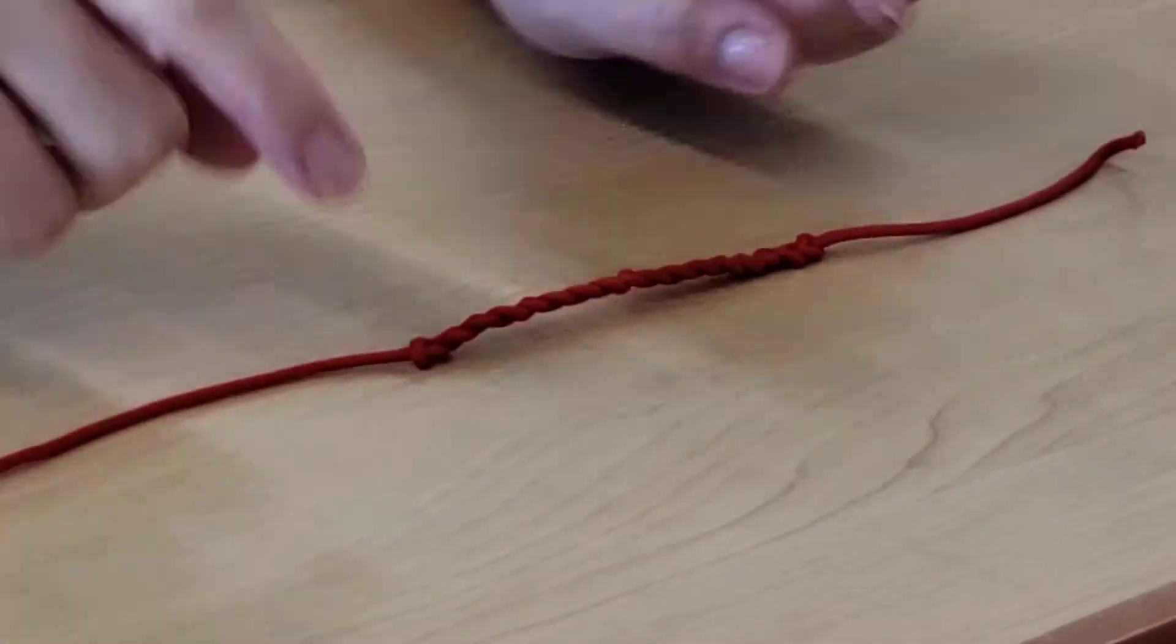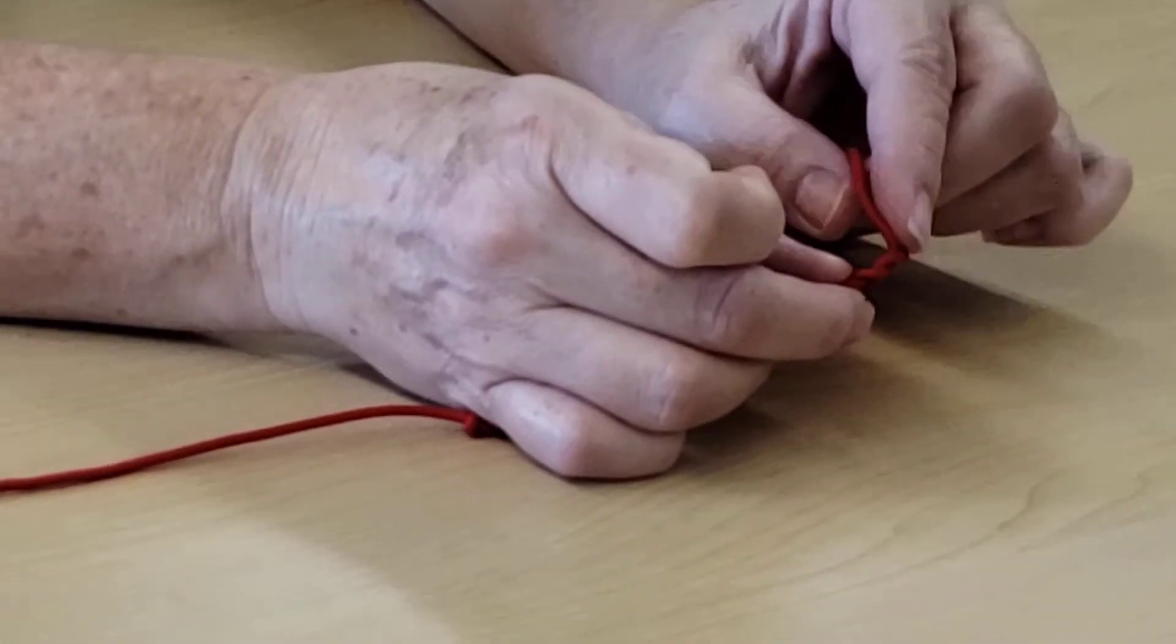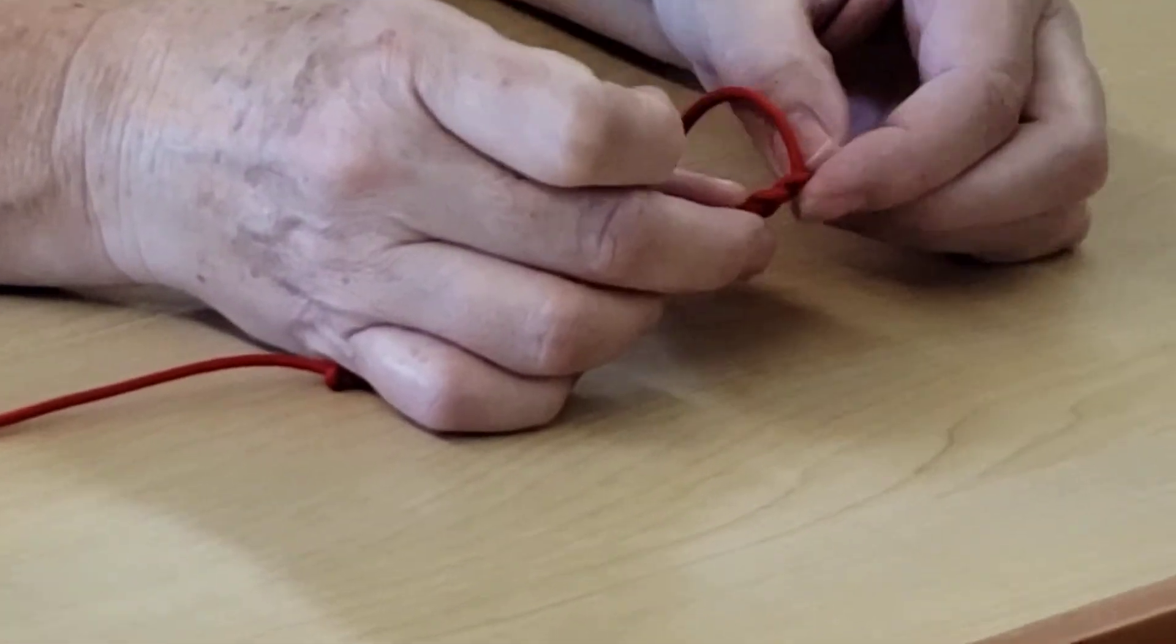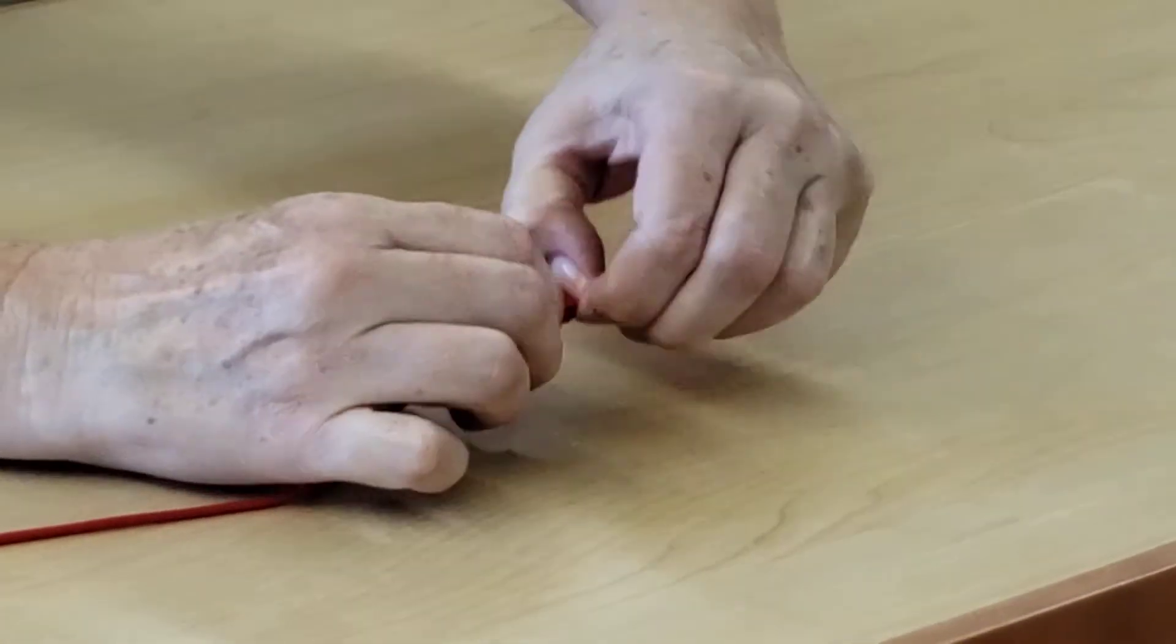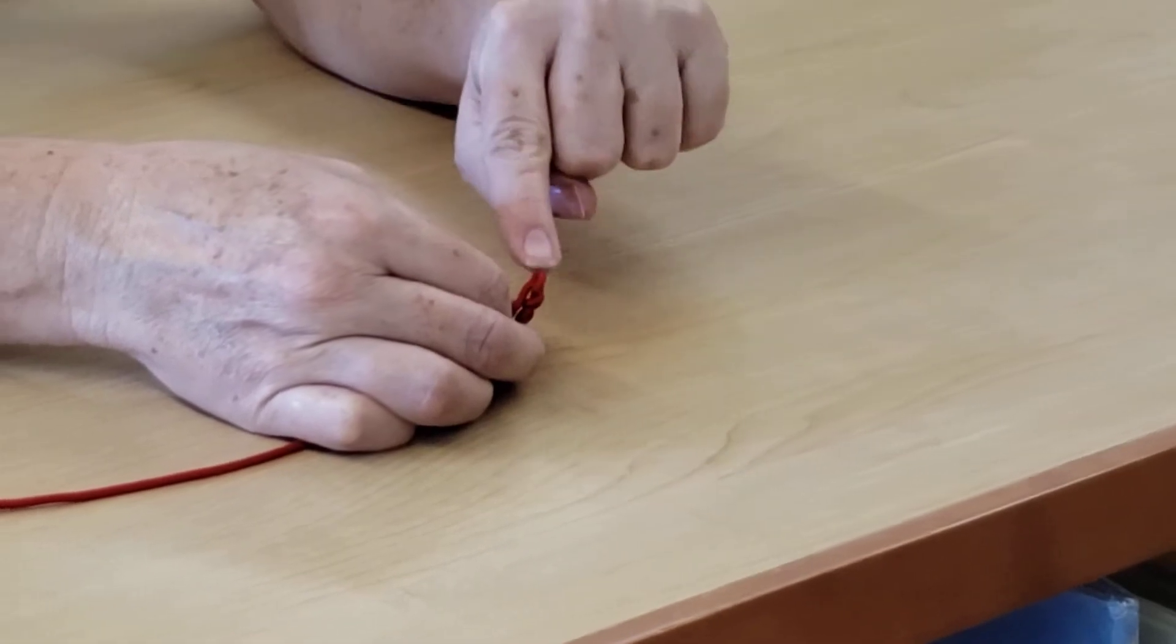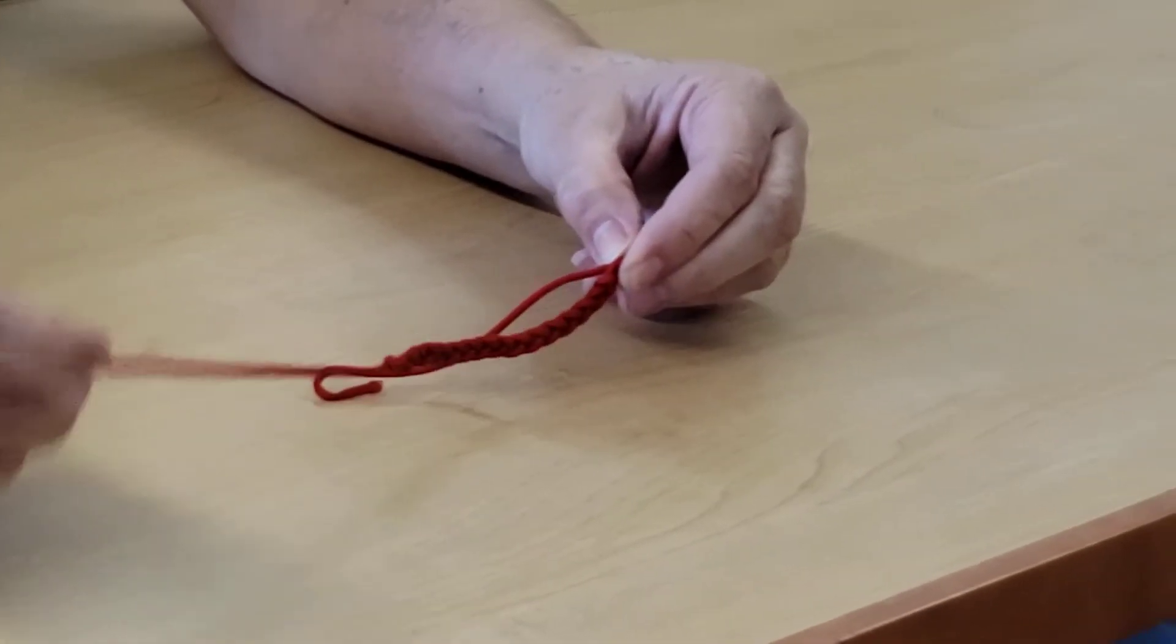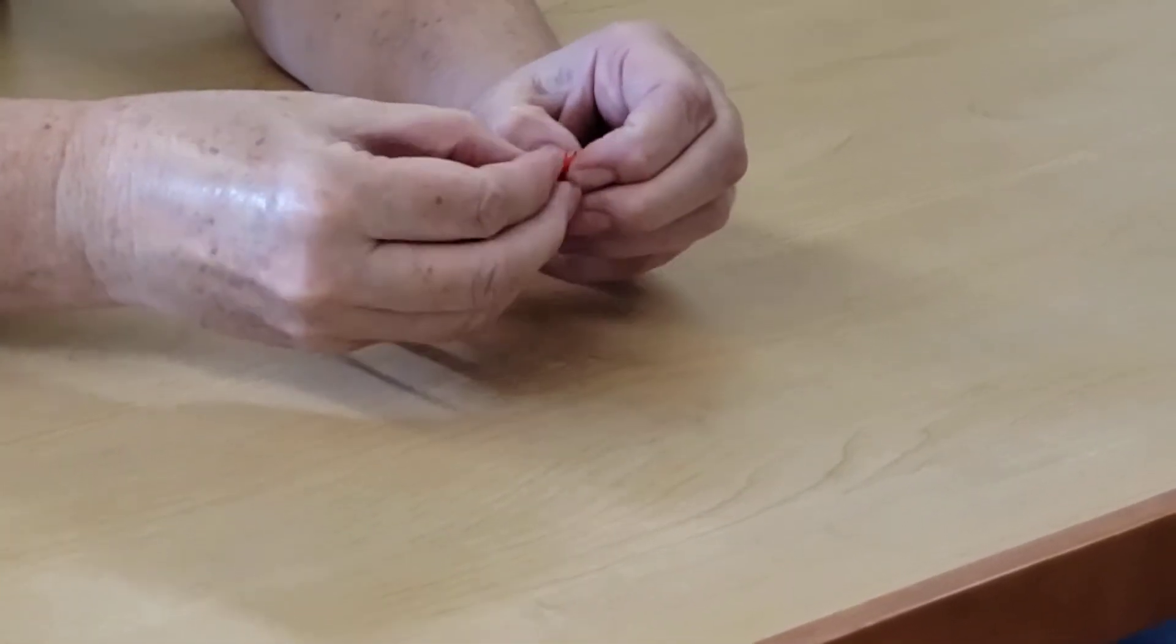All right, so now you got the center braided part. Now we're gonna make the closure where you can slide it together, and this is really simple. When I learned this I was amazed. Okay, so you're gonna go back to the beginning here and you're gonna pull it so that you can see a little hole at the top, just at that very very first loop.